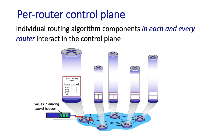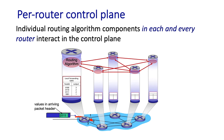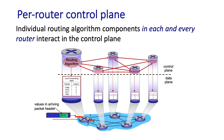In the traditional routing approach, a distributed routing algorithm runs in all of the network routers — a piece in every network router. The routing algorithm function in one router communicates with the routing algorithm functions in other routers to compute the values in these forwarding tables.